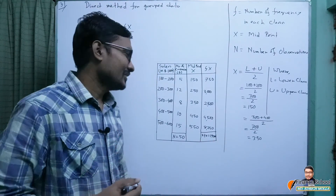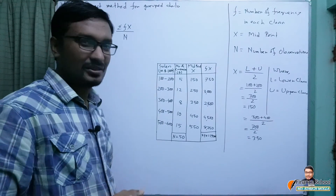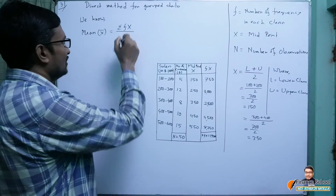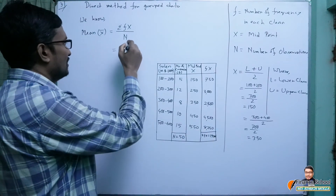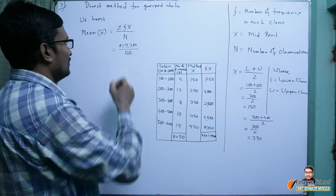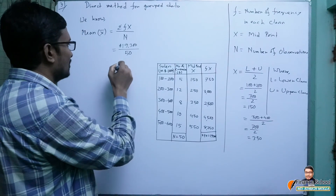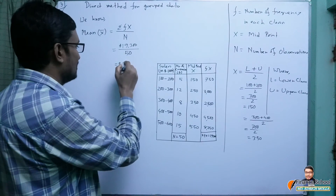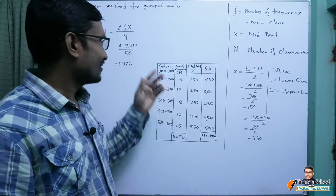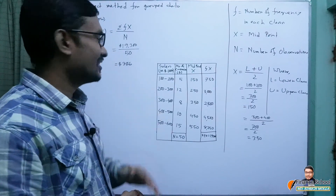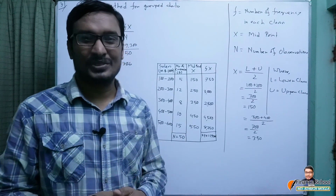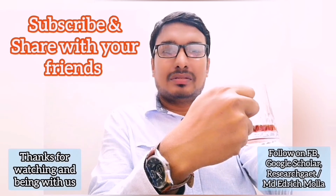We now input the computed values into the equation to get the mean using the direct method for grouped data. Mean x-bar = Σfx / n = 19,300 / 50 = 386 dollars (thousand). This is the mean or average when we are given grouped data using the direct method. I hope you have understood this calculation and found it helpful.